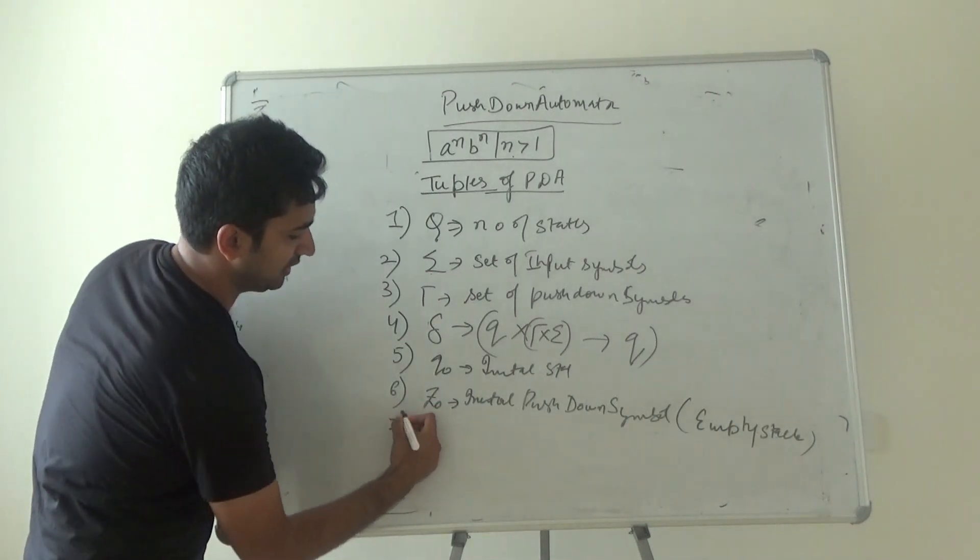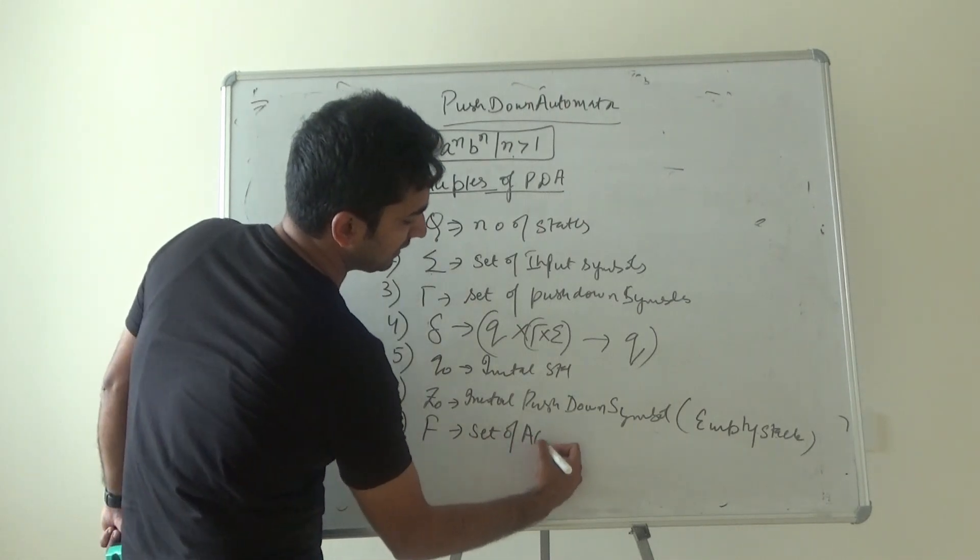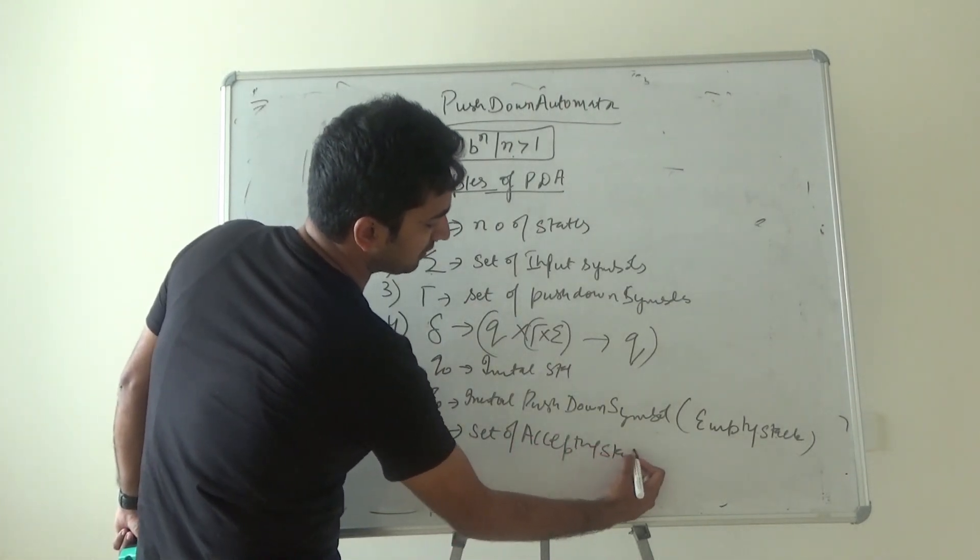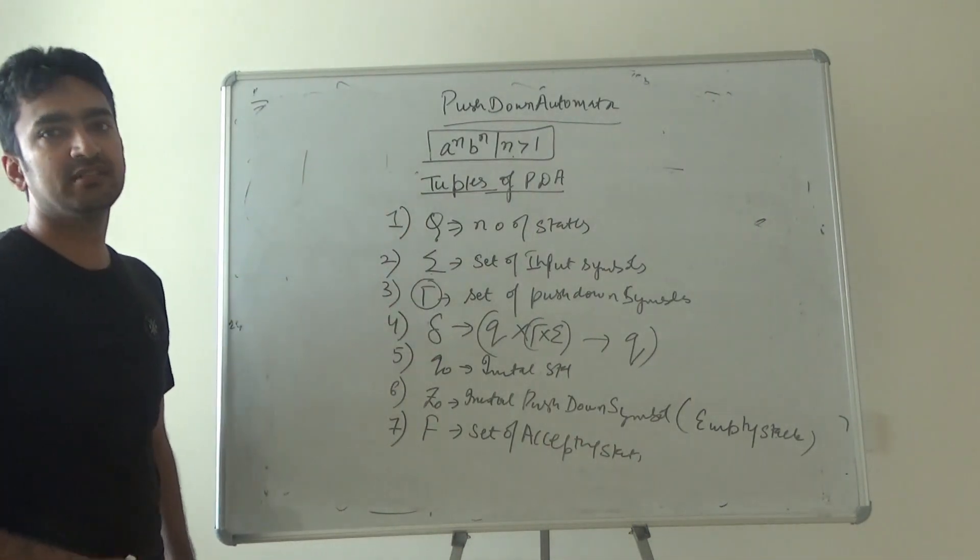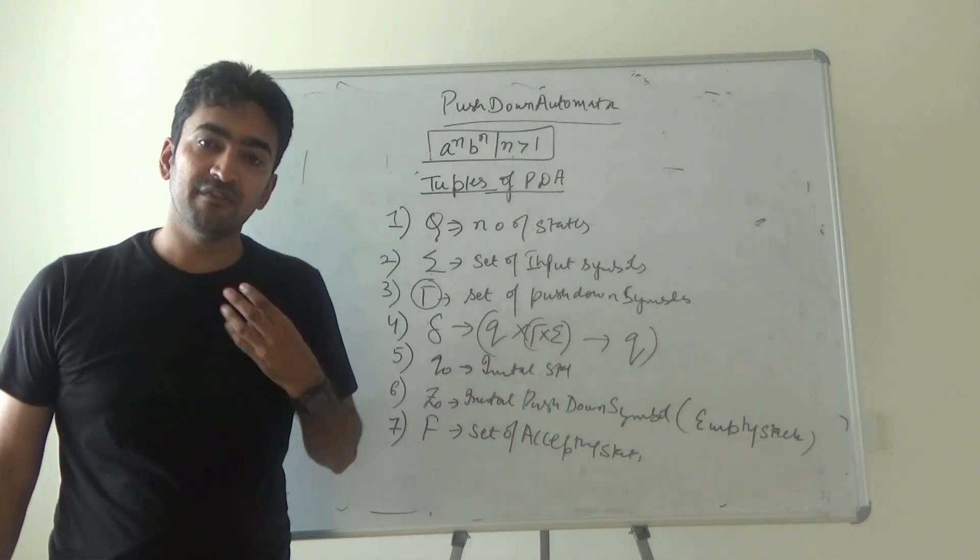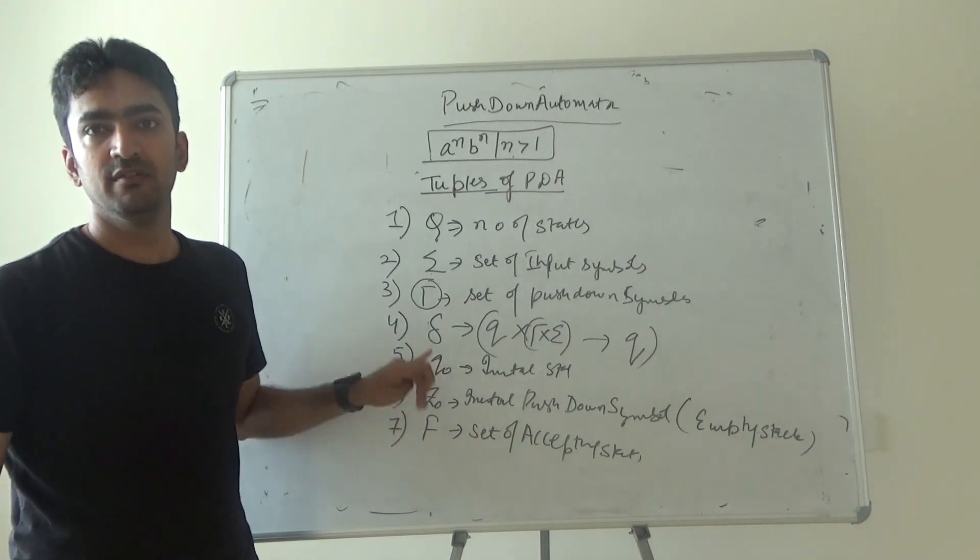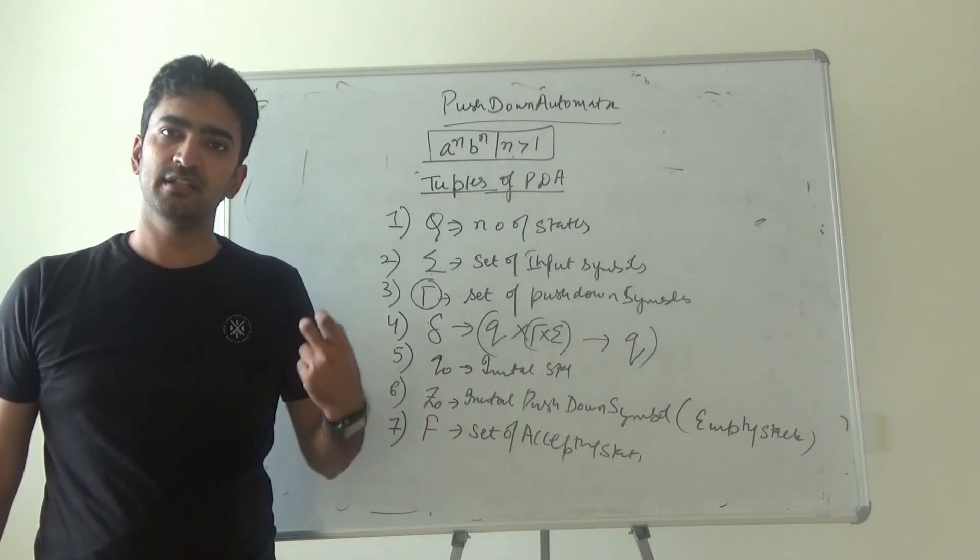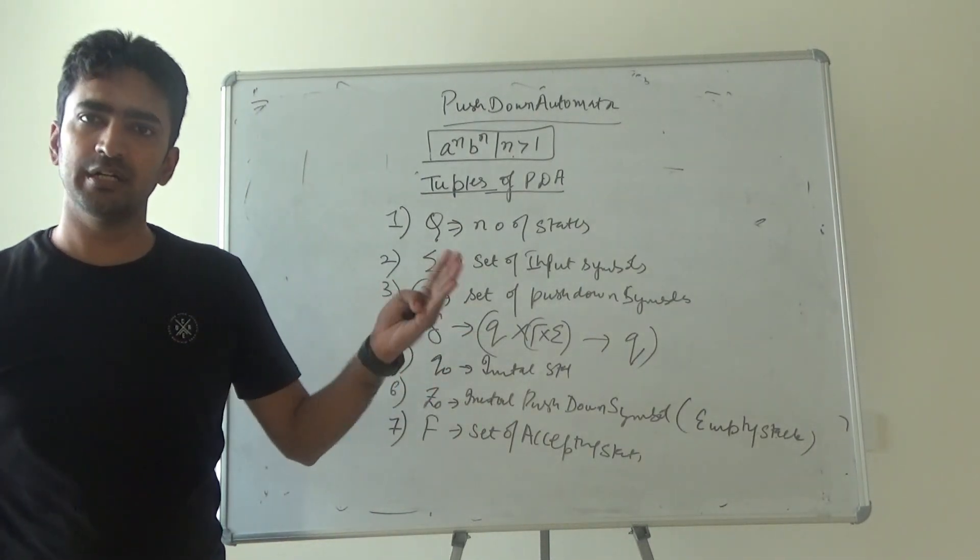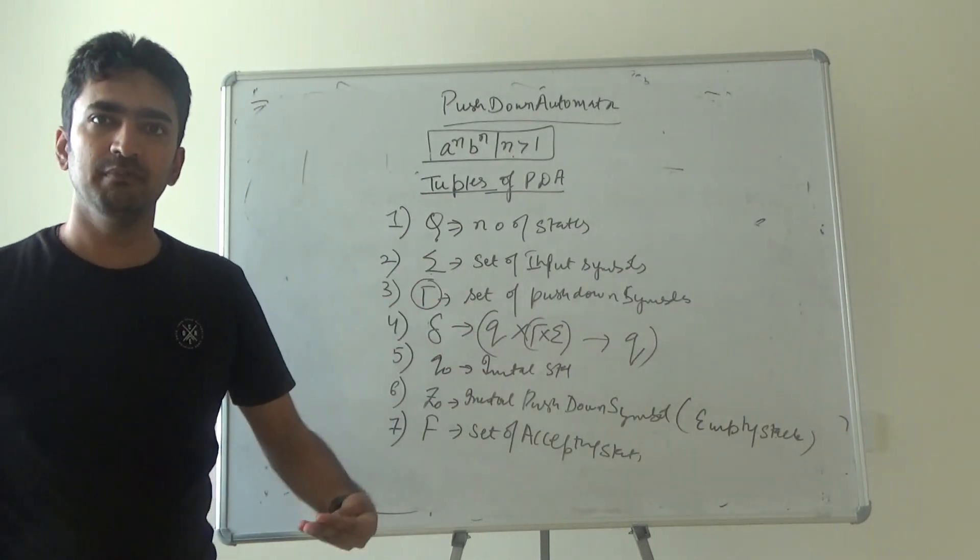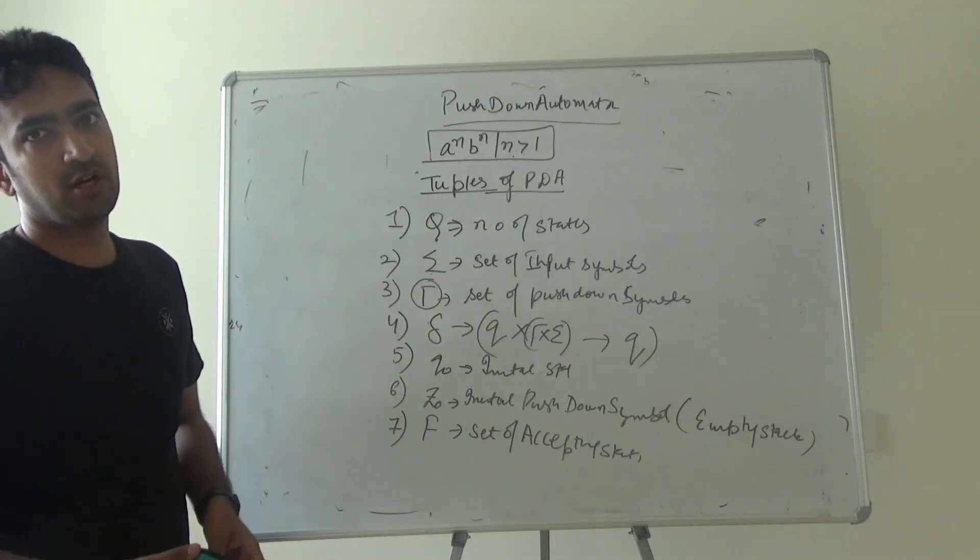Last but not least, we have capital F. Capital F is the set of accepting states. So there are two tuples which are added over here. One is gamma that represents a set of push down symbols. So whatever push down symbol you have used, like one of the push down symbols that you are using is Z_0 which will represent an empty stack, and other operations of push down symbols which are used in gamma that you will come to know in upcoming videos. So these are the seven tuples of push down automata.